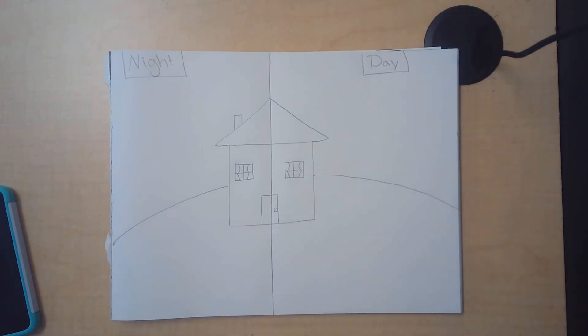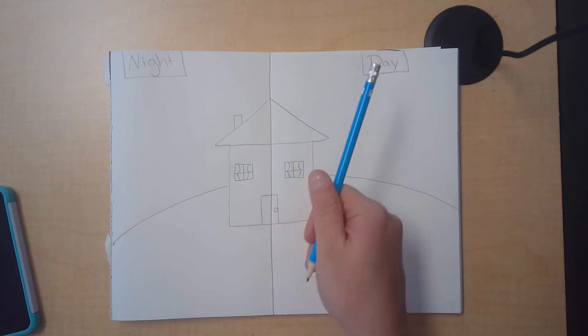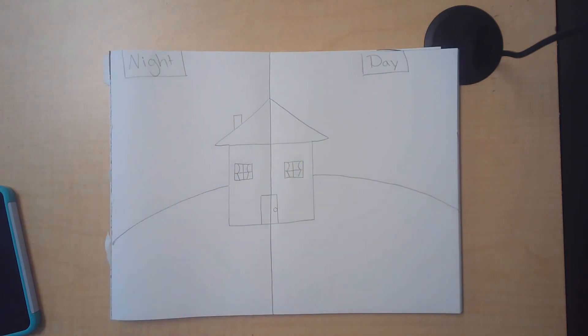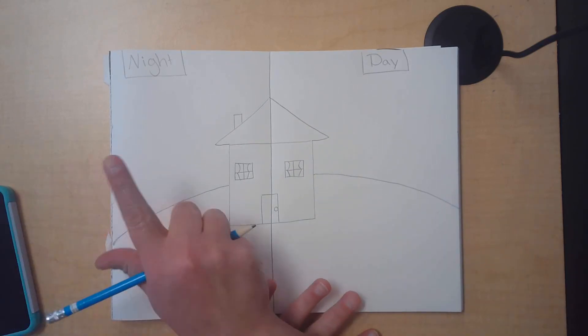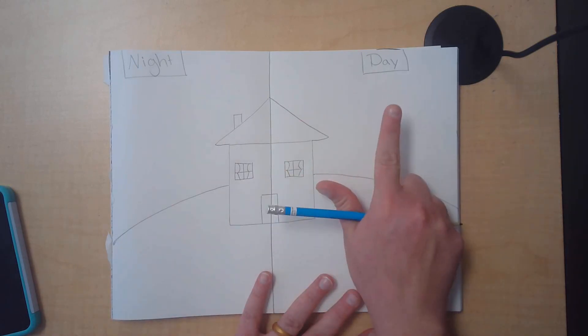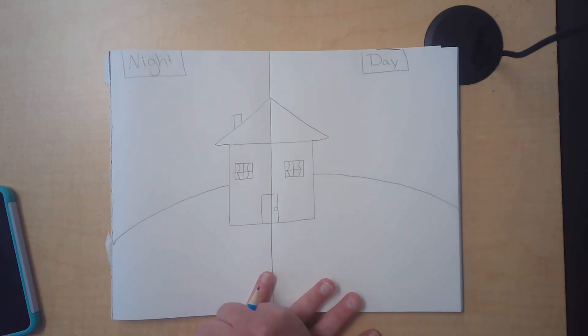Now we've talked all about the different types of things that we see in the daytime and at nighttime. Your job for the rest of this class is to use your big old brain to think about details that you can add in to help one side look like nighttime and the other side look like daytime. Let me know when you get done because I would love to put your artwork into Artsonia.